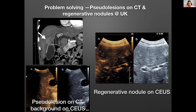Another problem-solving tool is pseudo-lesions. We all know these lesions could be due to perfusion variation but look like they're arterially enhancing. I have a case from UK where there was arterial enhancement — more non-mass-like arterial enhancement close to the gallbladder, just superior on the coronal. When we did the contrast-enhanced ultrasound, there was no lesion to be found, no arterial enhancement, no borders to this area — it just looked like the rest of the liver parenchyma. So we called it a pseudo-lesion on CT; it was background on CEUS. We didn't need a biopsy.